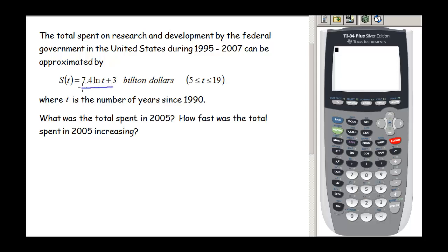We have a log in this model. The units are billion dollars and this function is only valid for t's between 5 and 19. They also tell us that t is the number of years since 1990. They ask us two things: what was the total spent in 2005, and how fast was that total spent in 2005 increasing.